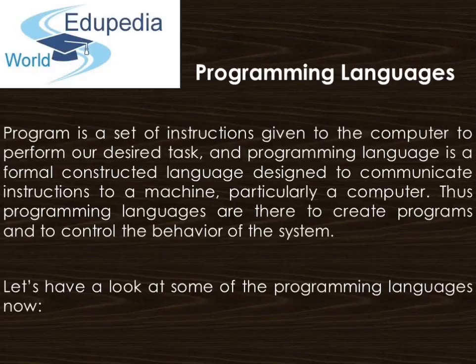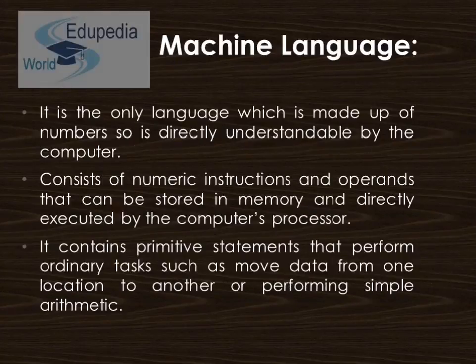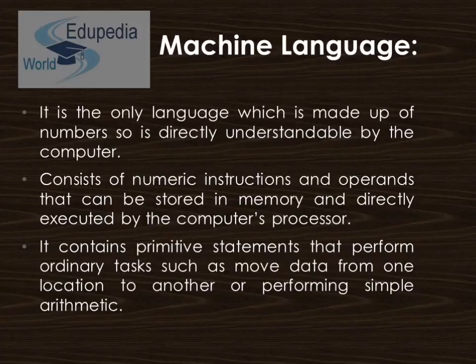Now let's have a look at some of the programming languages. Machine Language: it is the first and foremost language and is the only language which is made up of numbers or binary numbers, so it is directly understandable by the computer. It consists of numeric instructions and operands that can be stored in memory and directly executed by the computer's processor. It contains primitive statements that perform ordinary tasks such as moving data from one location to another or performing simple arithmetic.